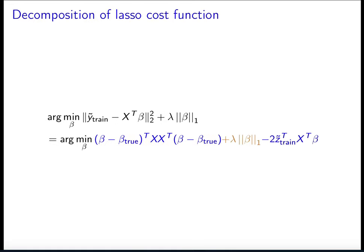We're going to start by decomposing the lasso cost function in a very similar way to what we did with OLS, ridge regression, and regularization via early stopping. We're going to first separate the least squares part of the cost function into a quadratic form that is centered at beta true, and then has this noise component.